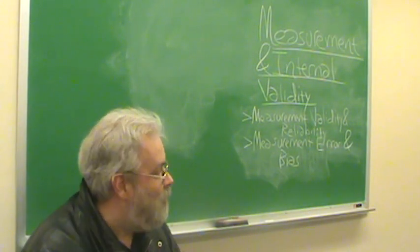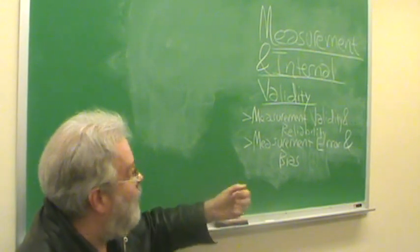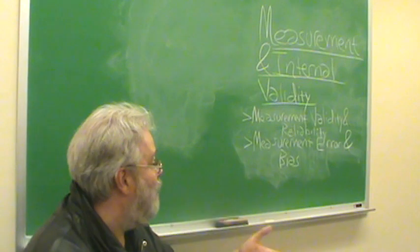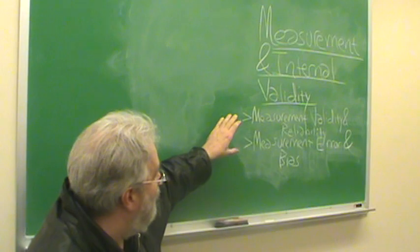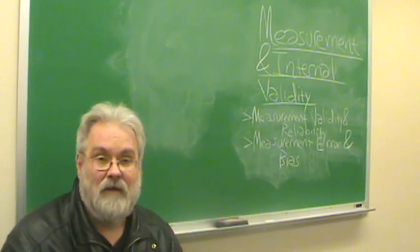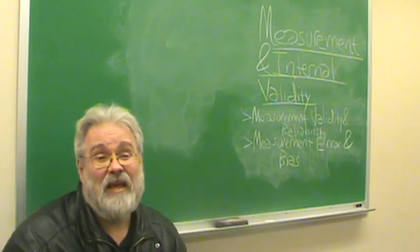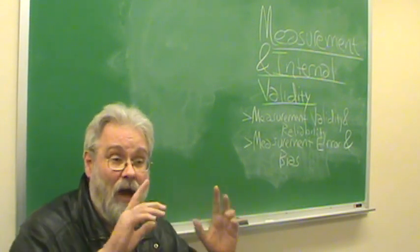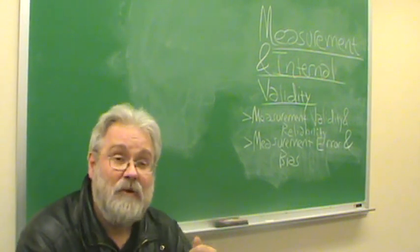Now, to be able to fully appreciate some of the basic arguments and ideas behind how to do measurement, how to do it properly, and to better understand how measurement can break down and go wrong, let's talk about a couple of related issues: measurement validity and reliability.